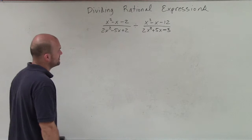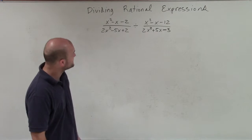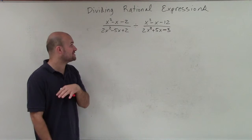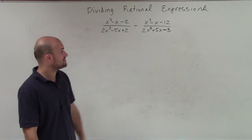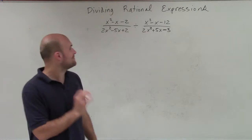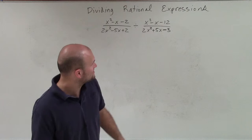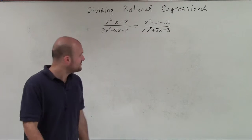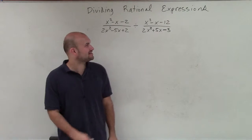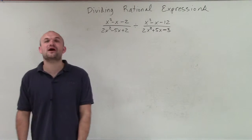Welcome. So what I have here is x squared minus x minus 2 divided by 2x squared minus 5x plus 2, divided by x squared minus x minus 12 divided by 2x squared plus 5x minus 3.